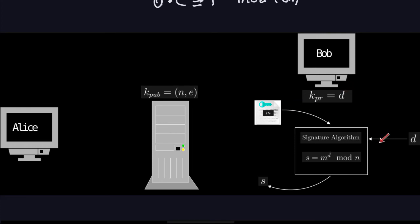The signature is computed by a simple modular exponentiation: S = M^D mod N, where D is the private exponent and N is the public modulus. The only person who can do this computation is Bob, because he's the only one who knows D. Out of this algorithm comes the signature S for that specific message — and remember, the signature is attached to the message and cannot exist without it.